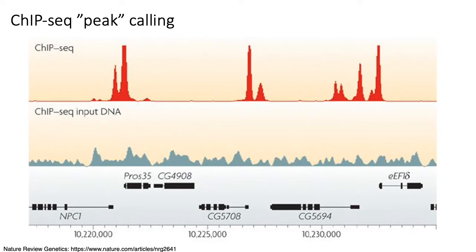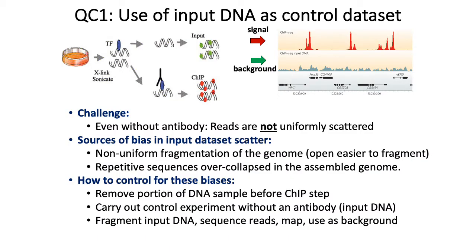You can't just look at ChIP-seq reads mapped to the genome because you have to take into account background bias — bias towards ChIP-seq reads falling in certain regions of the genome versus others. When you call ChIP-seq peaks, you have to look at some control experiment which gives you an indication of where reads tend to fall if you didn't have any antibody. A key quality control step is generating a control dataset to tell you about sequencing bias in your experiment.